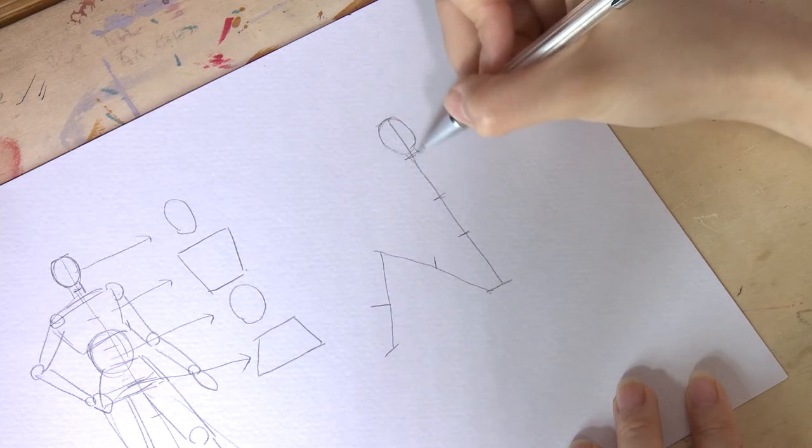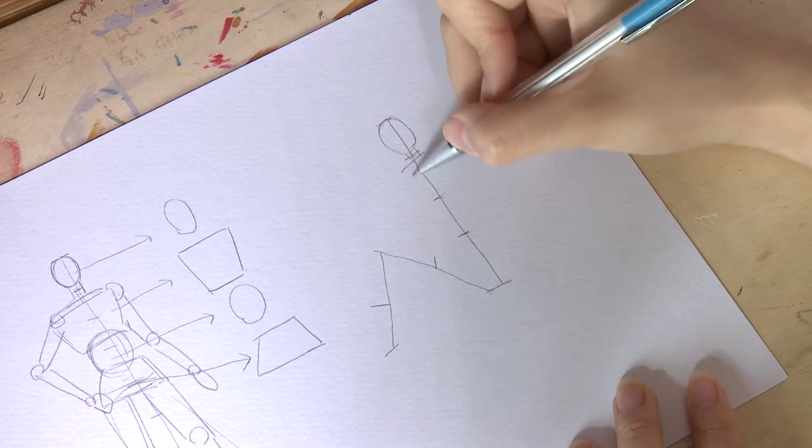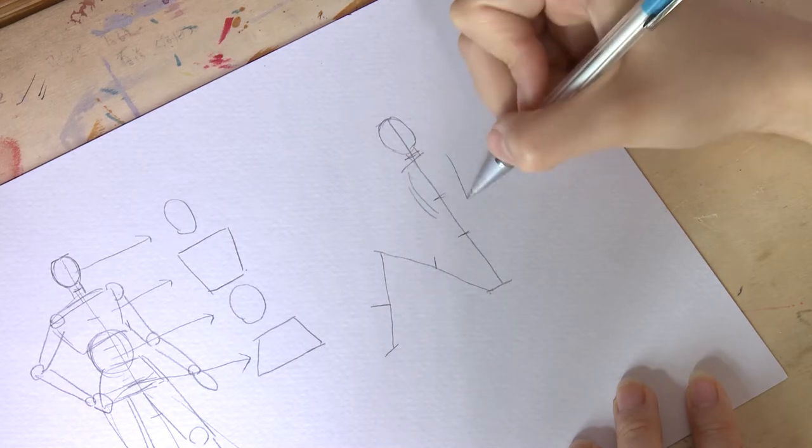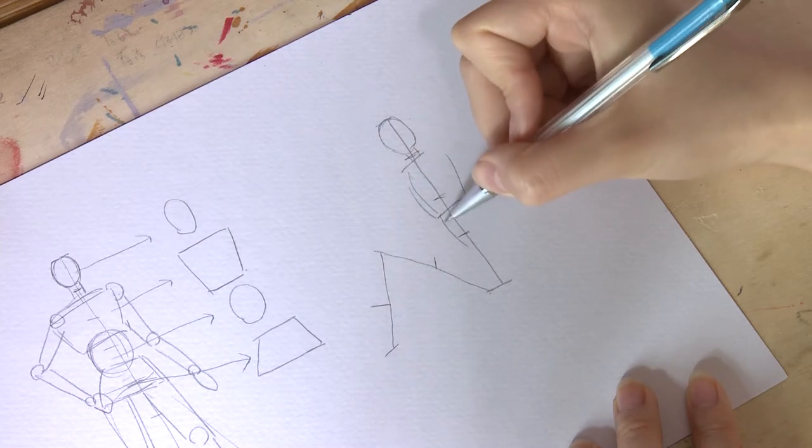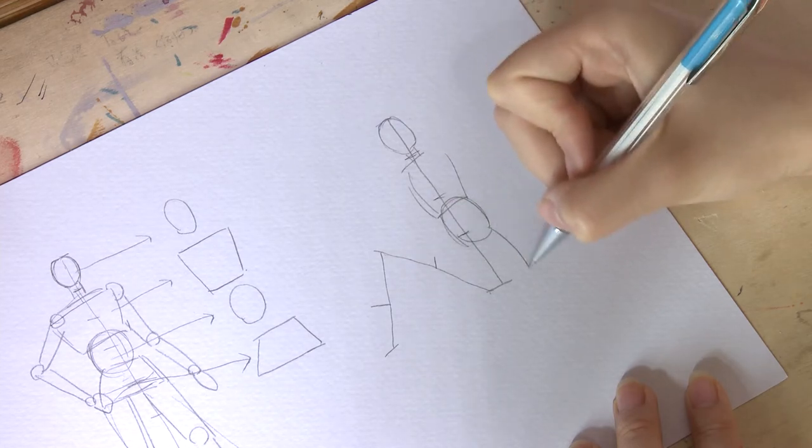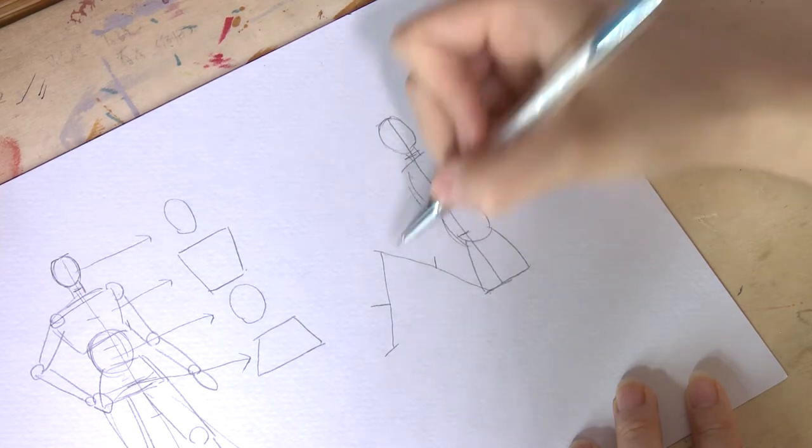Then, position the elements of the body like this. The head, the upper body, a circle for the belly, the pelvis, and the legs.